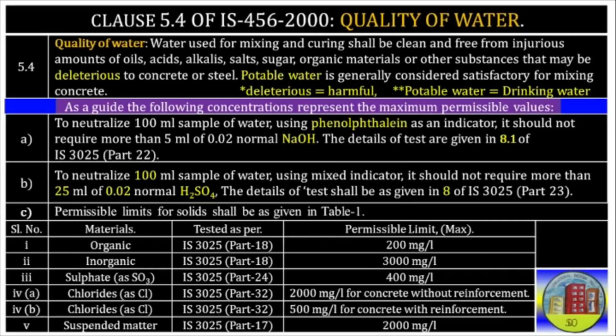A: To neutralize 100 ml sample of water using phenolphthalein as an indicator, it should not require more than 5 ml of 0.02 normal NaOH. The details of the test are given in IS 3025 Part 22. B: To neutralize 100 ml of sample of water using mixed indicator, it should not require more than 25 ml of 0.02 normal H2SO4. The details of the test shall be as given in IS 3025 Part 23.